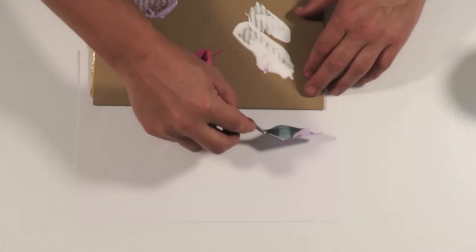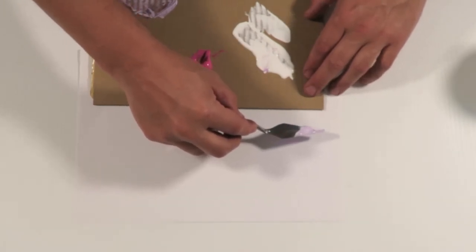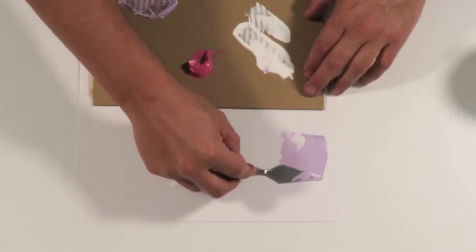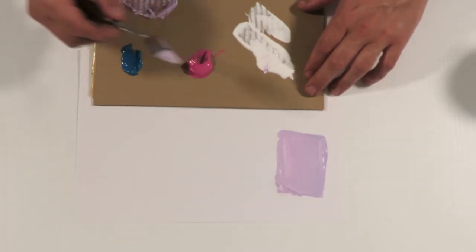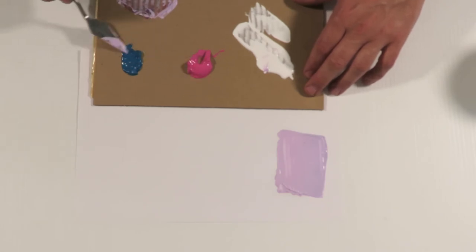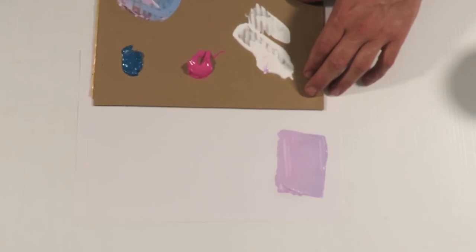Mix this up. Paint it on here. There you go. Okay, we're going to make this a bit darker, so we put some more blue into it. We put some more turquoise into it to make it more darker and a bit more white.